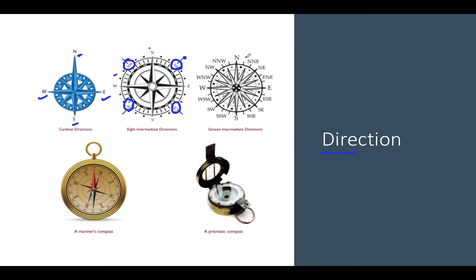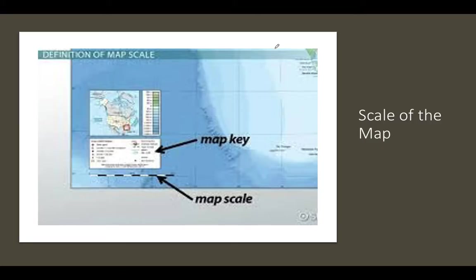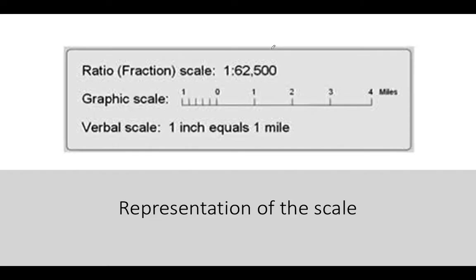We can further divide into 16 intermediate directions, such as North-Northeast, Northeast, East-Northeast, East, East-Southeast, Southeast, South-Southeast, South-Southwest, Southwest, West-Southwest, West, West-Northwest, Northwest, and North-Northwest. These are all the directions. Now moving on to the scale of a map.